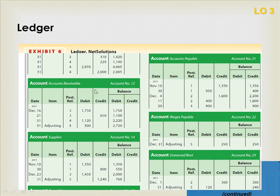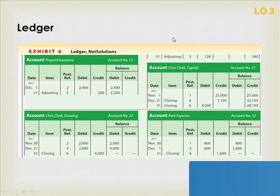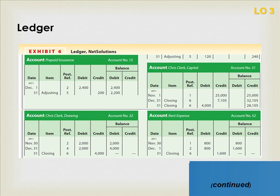Looking at the adjusted entries and balances, we see the capital account, drawing account, and expense accounts. The drawing account's last line shows the fourth closing entry — we credited this account for $4,000, bringing it to zero. Capital started at $25,000, was credited for $7,105 representing net income, and then debited for $4,000 for the drawing, bringing the ending capital balance to $28,105. You can verify this on the statement of owner's equity as well as the balance sheet.